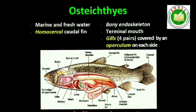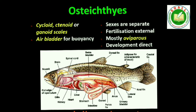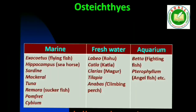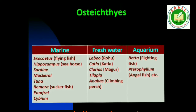Class Osteichthyes: It includes both marine and freshwater fishes with bony endoskeleton. Their body is streamlined. Mouth is mostly terminal. They have four pairs of gills covered by an operculum on each side. Skin is covered with cycloid or ctenoid scales. Air bladder is present which regulates buoyancy. Heart is two-chambered (one auricle and one ventricle). They are cold-blooded animals. Sexes are separate. Fertilization is usually external. They are mostly oviparous and development is direct. Examples — Marine: Exocoetus (flying fish), Hippocampus (sea horse). Freshwater: Labeo (rohu), Catla, Clarias (magur). Aquarium: Betta (fighting fish), Pterophyllum (angelfish).